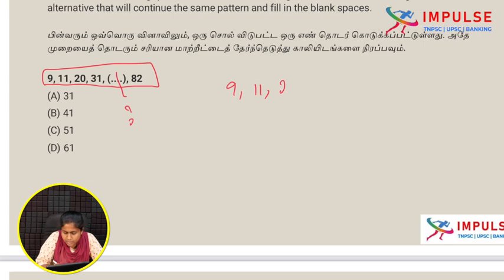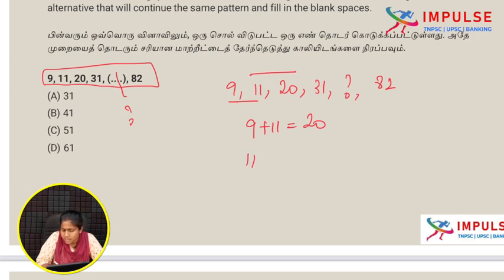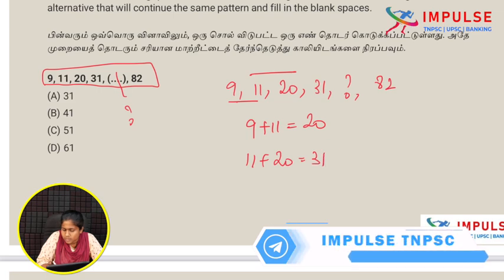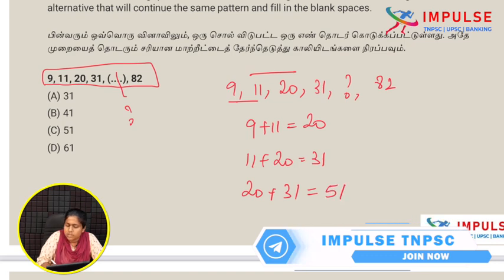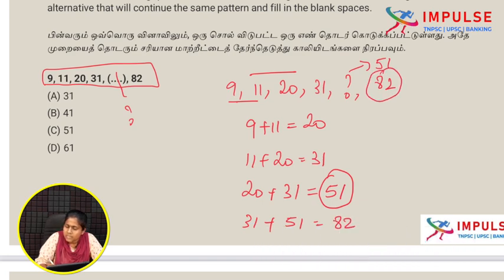Let's look at the question: 9, 11, 20, 31, ?, 82. The logic is addition: 9 plus 11 equals 20, 11 plus 20 equals 31, then 20 plus 31 equals 51. So the missing number is 51. Checking: 31 plus 51 equals 82, which is correct. The missing number is 51. Option C.